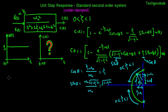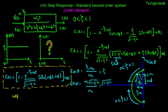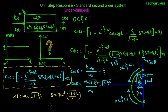So C of t can be written compactly as 1 minus e to the power minus zeta omega n t over the square root of 1 minus zeta squared, times sin of omega d t plus theta, times u of t. Where omega d equals omega n times the square root of 1 minus zeta squared, and theta equals tan inverse of the square root of 1 minus zeta squared over zeta. We will discuss the time domain shape and associated design parameters in the next section.